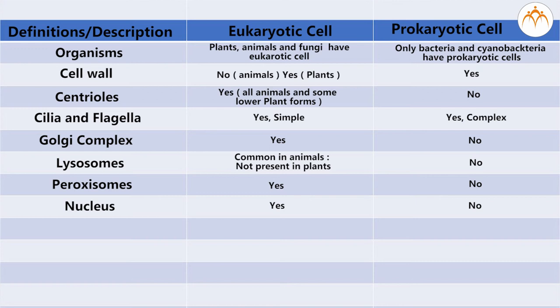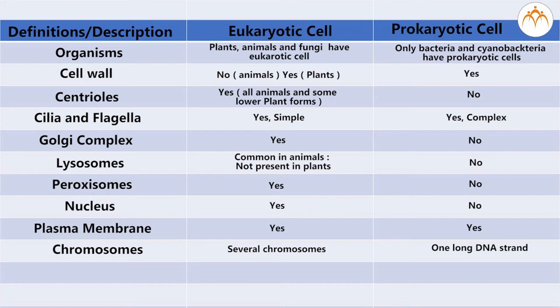Nucleus: Present in eukaryotic cells, not present in prokaryotic cells. Plasma membrane: present in eukaryotic cell, also present in prokaryotic cells. Chromosomes: in eukaryotic cell several chromosomes are present, in prokaryotic cell one long DNA strand is present. Ribosomes: present in eukaryotic cell, present in prokaryotic cell. Endoplasmic reticulum: present in eukaryotic cell, absent in prokaryotic cell.